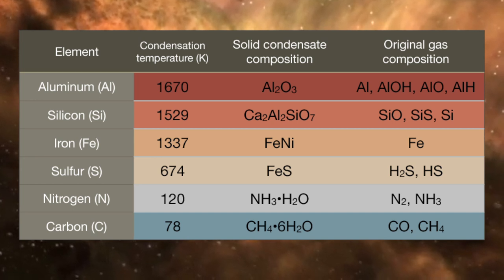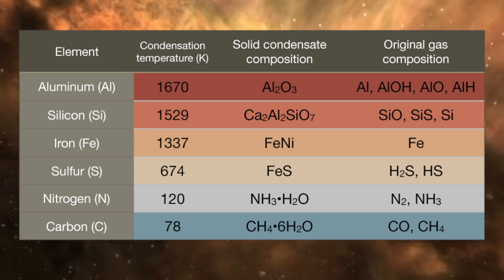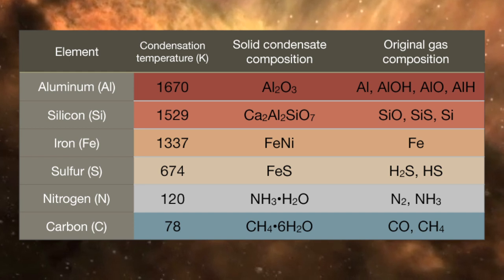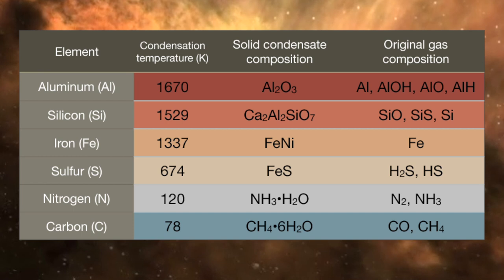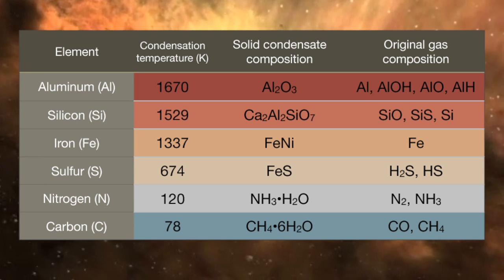Iron condenses out at a little bit lower temperature, so you tend to get iron metal and silicates condensing out in the inner part of the system to about out to the distance of Mars or so, a couple of astronomical units.